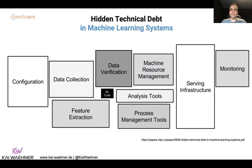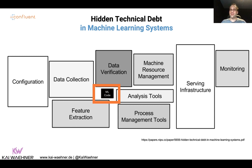It's important to understand the hidden technical debt in machine learning systems. This is a great paper by Google that explains what you have to do to bring machine learning into production. The small black thing in the middle is actually writing ML code — that's just a small fraction of the overall architecture and tasks to deploy machine learning. In Hello World examples, you don't have to worry about data collection, feature extraction, data pre-processing, scalable deployment, or monitoring. Data scientists spend most of their time somewhere else.